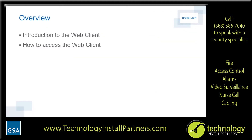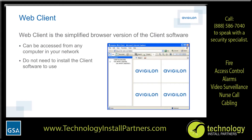The main learning objectives for this module is to give you an overview of the ACC web client and show you how to access it from the web browser. The web client is a simplified version of the client software that allows you to access any Avigilon server connected on your network. You can access the web client from any web browser with access to your local network, and you do not need to install the client software to access the web client.